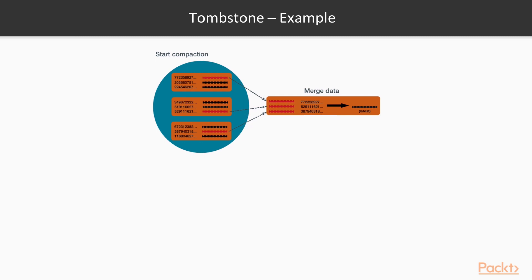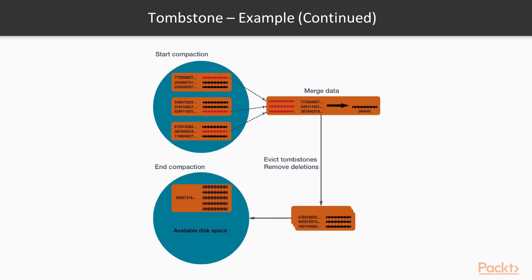Let's look at an example of how tombstones and deletion of records work in Cassandra. We have an example where we are marking three records as tombstones. When the compaction process starts, it merges data from SSTables and retains only data that is not marked as a tombstone. It evicts tombstones and removes deletions, and when those SSTables are merged into one SSTable, the resulting SSTable does not contain the tombstones.